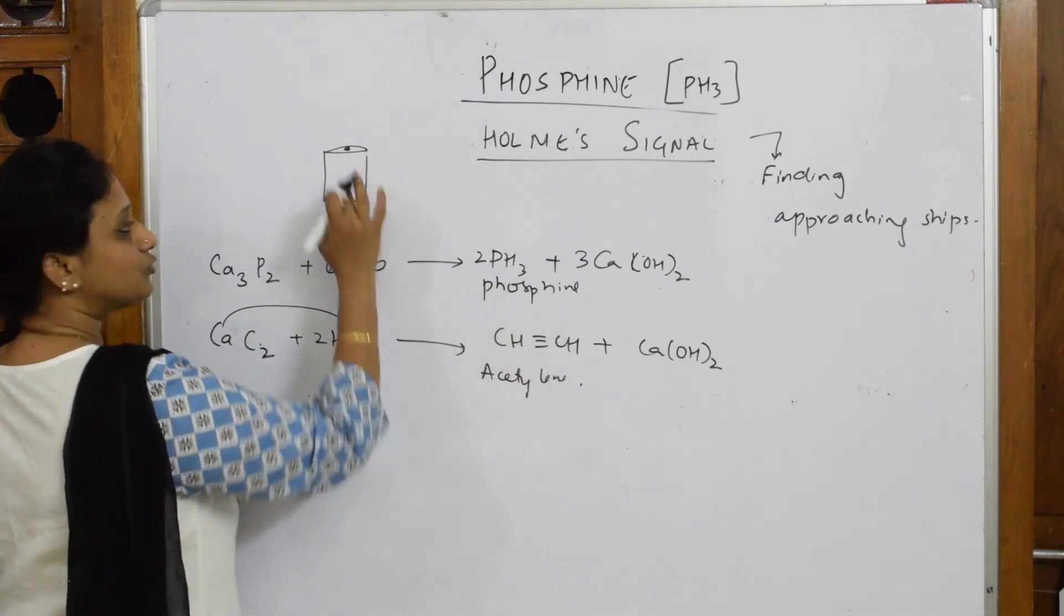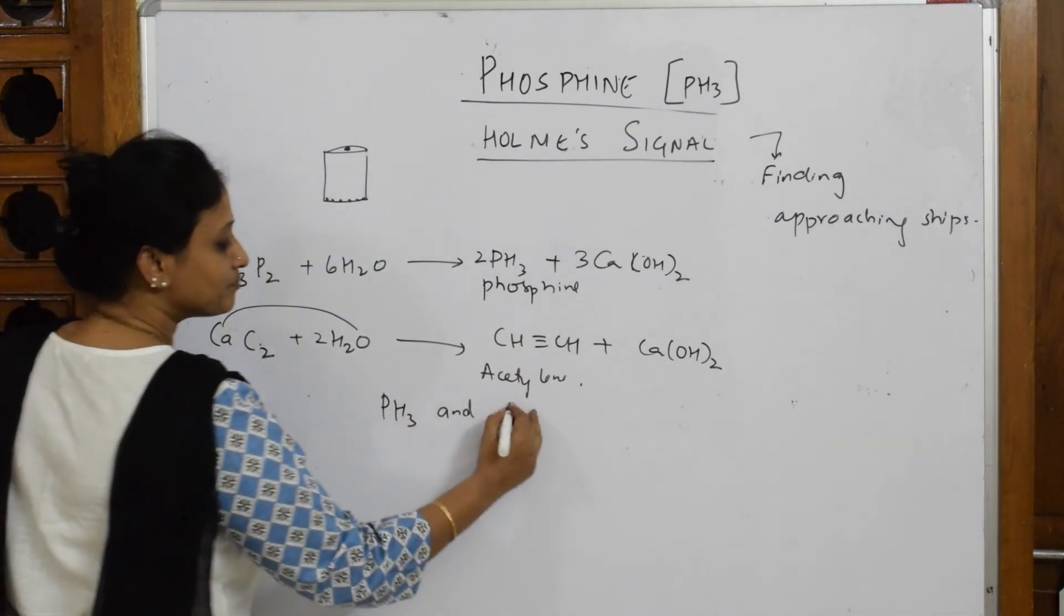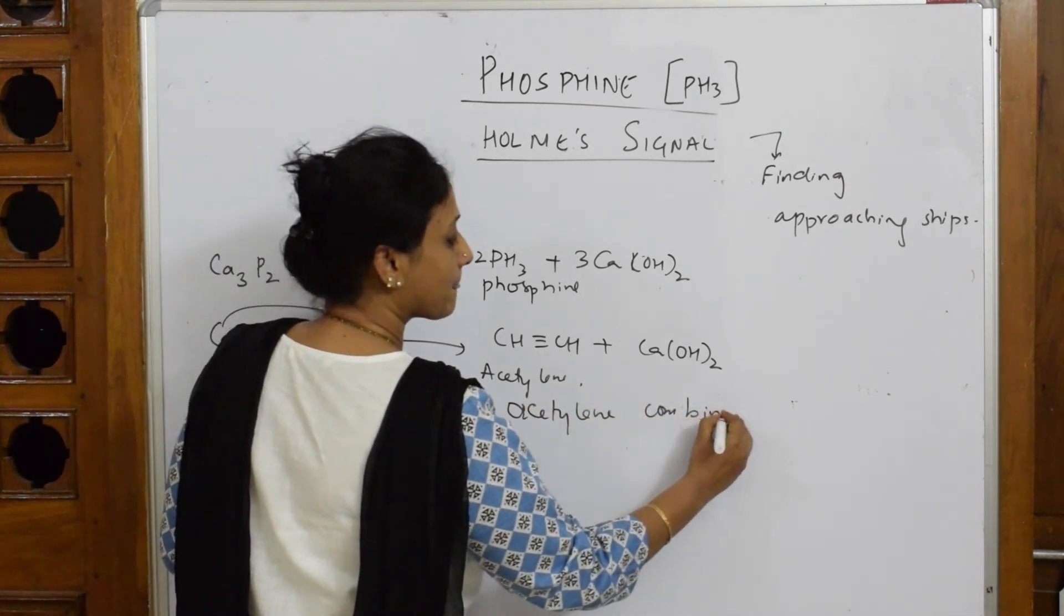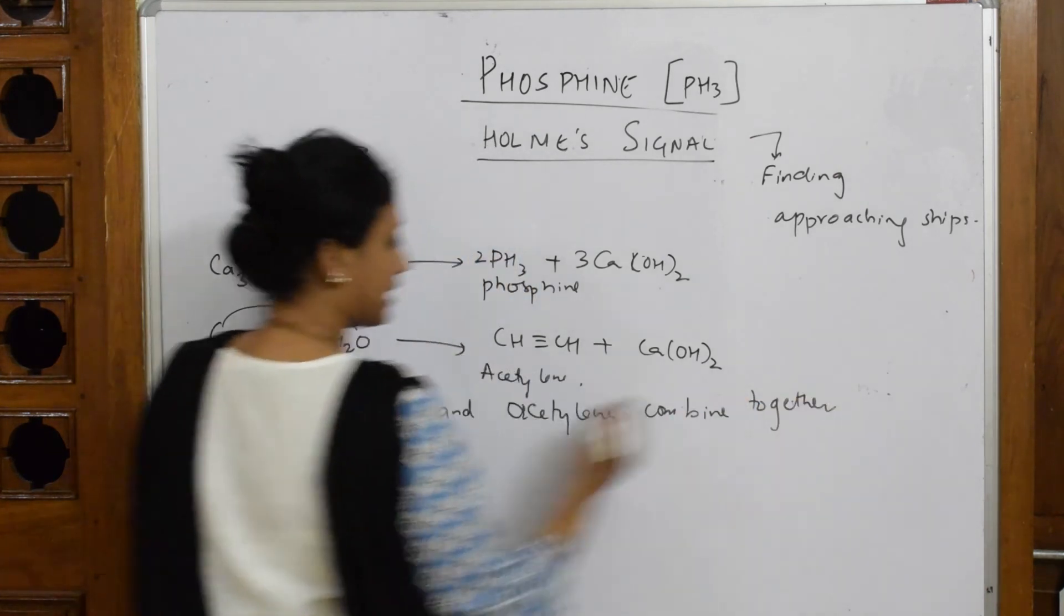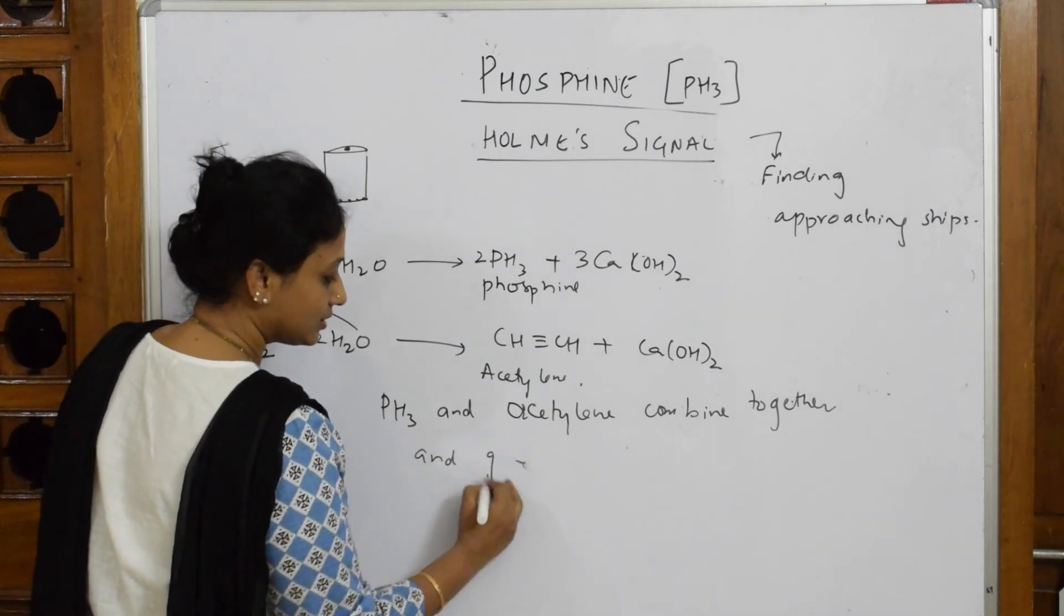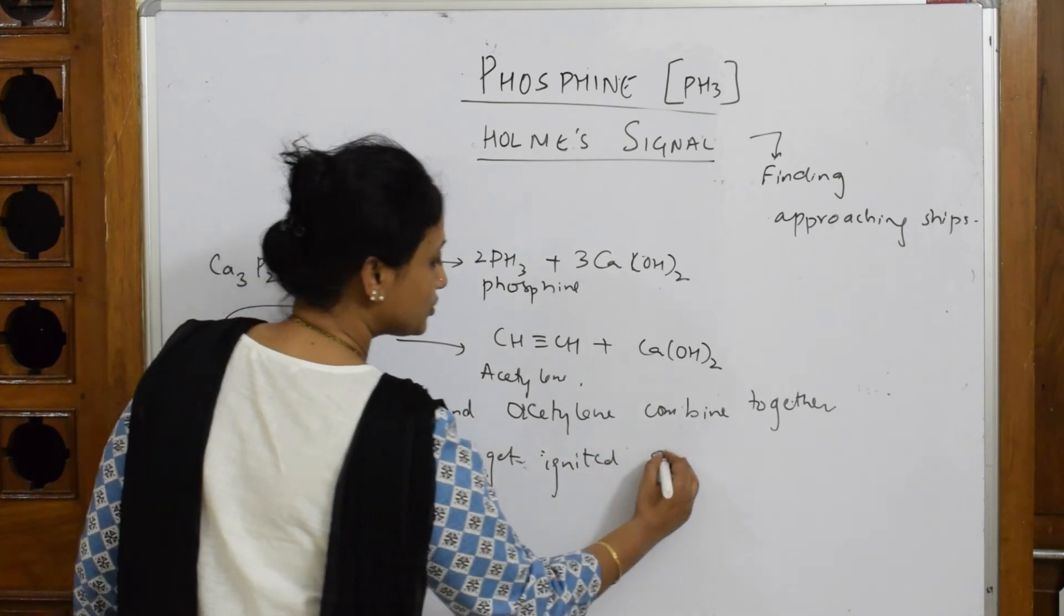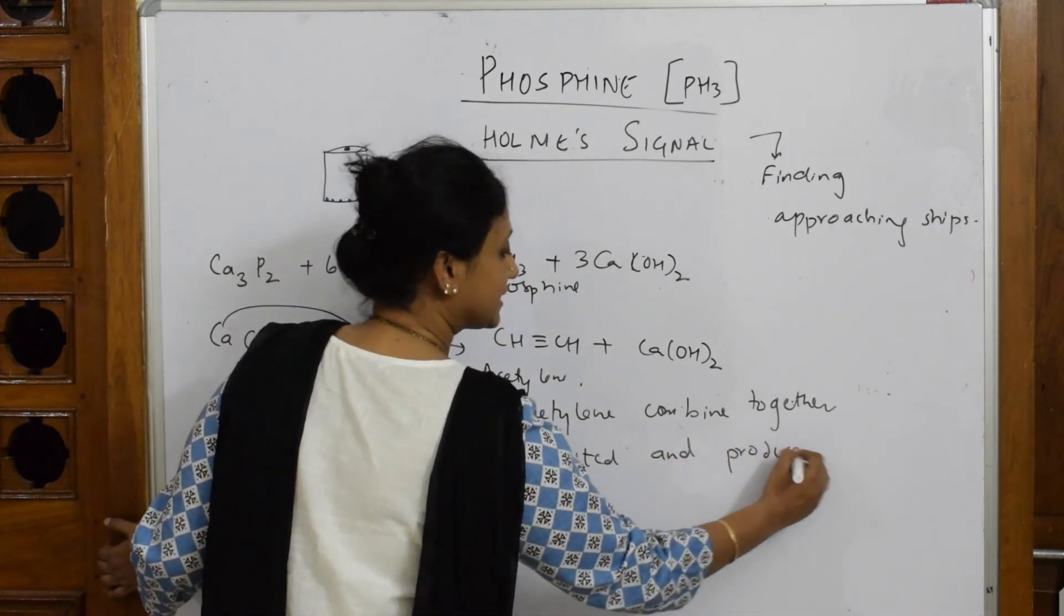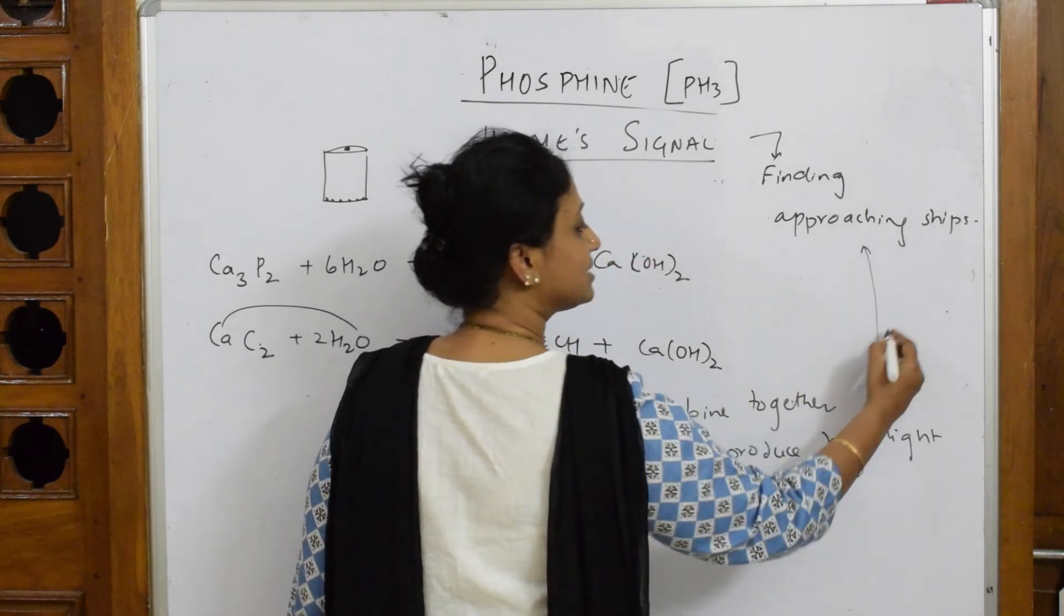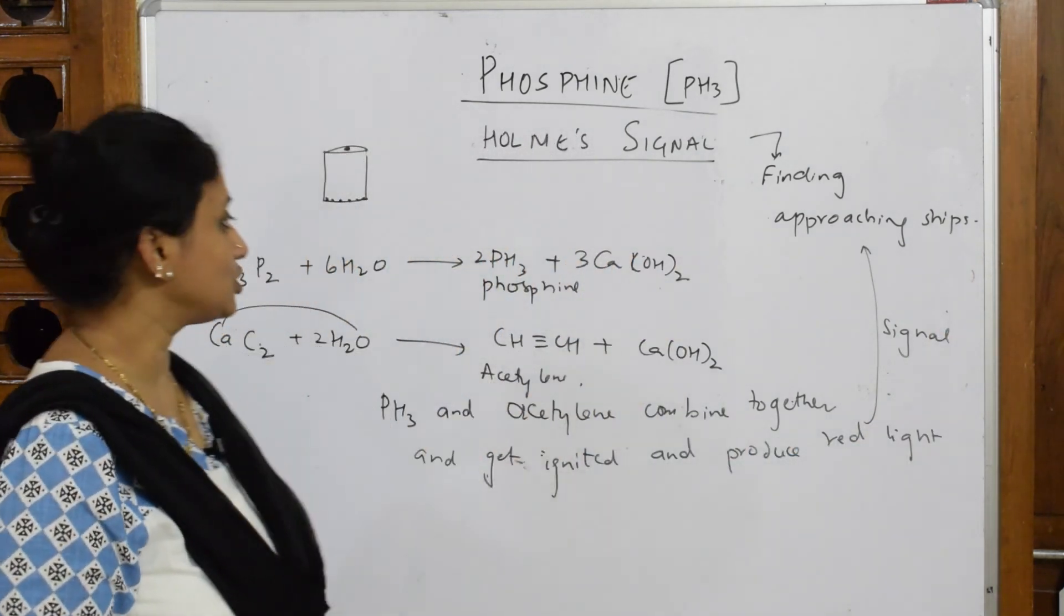So these two are already formed in the reaction. What will I write? Phosphine and acetylene combined together and get ignited and produce red light. This red light is used as a signal for approaching ships.